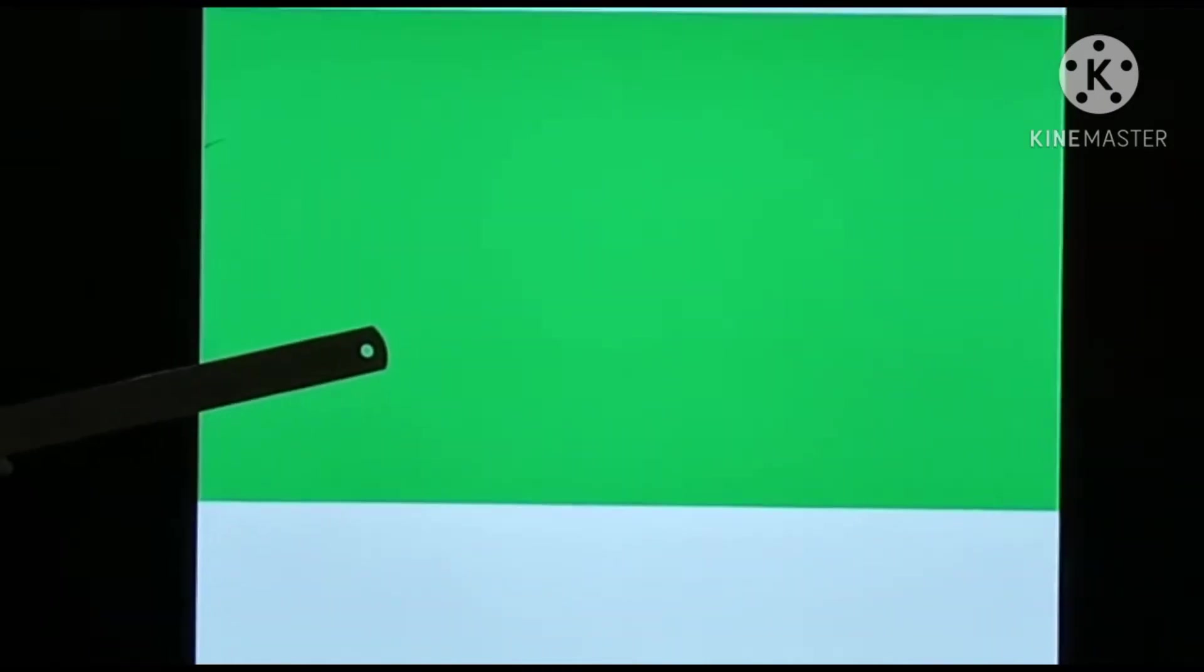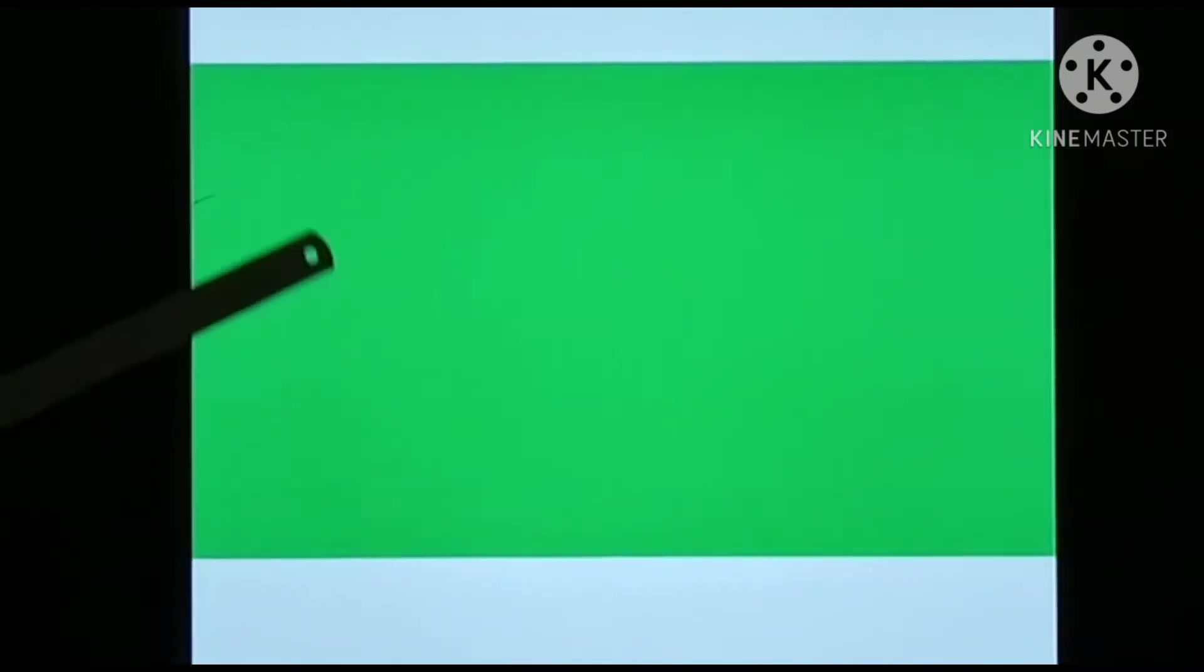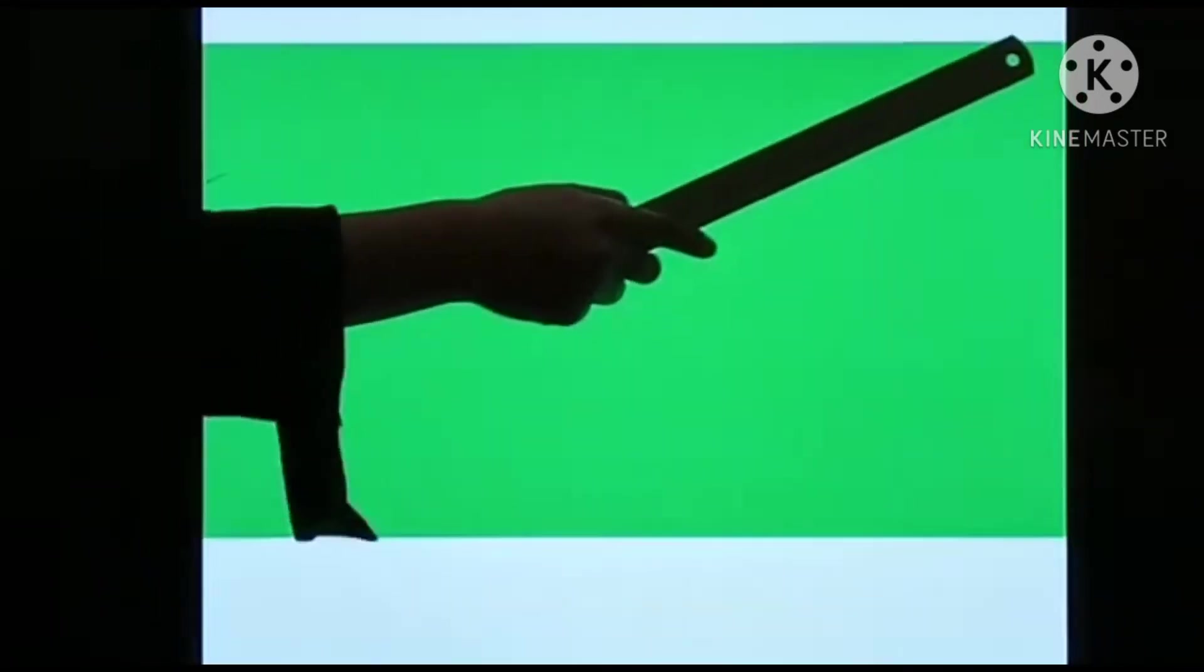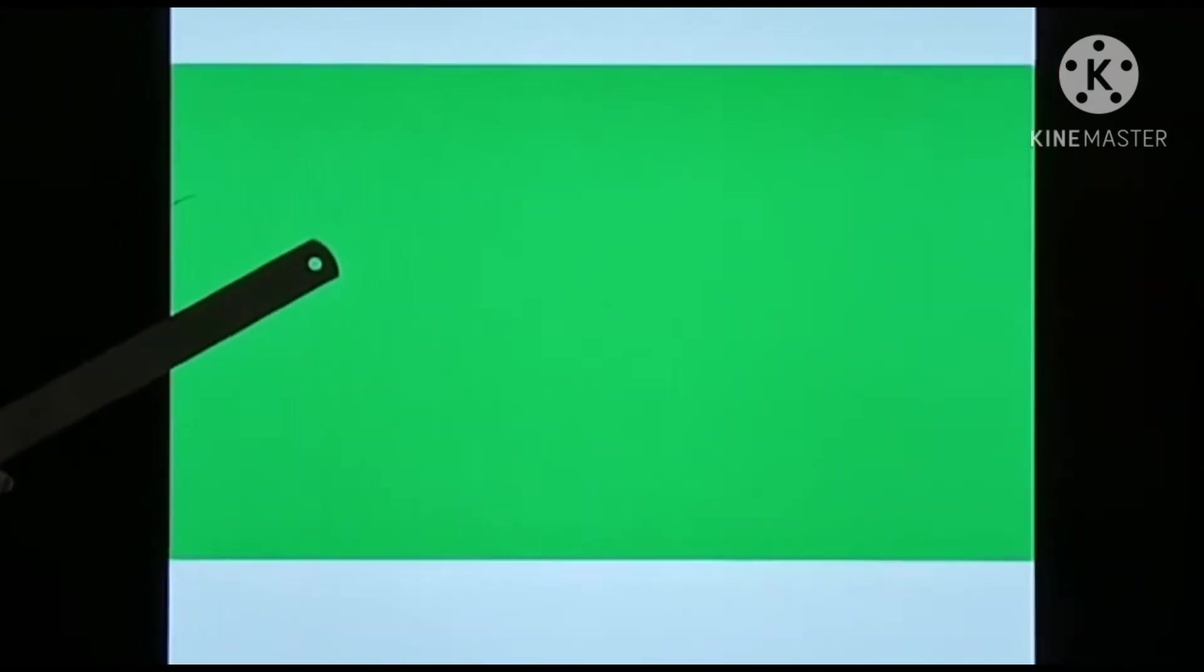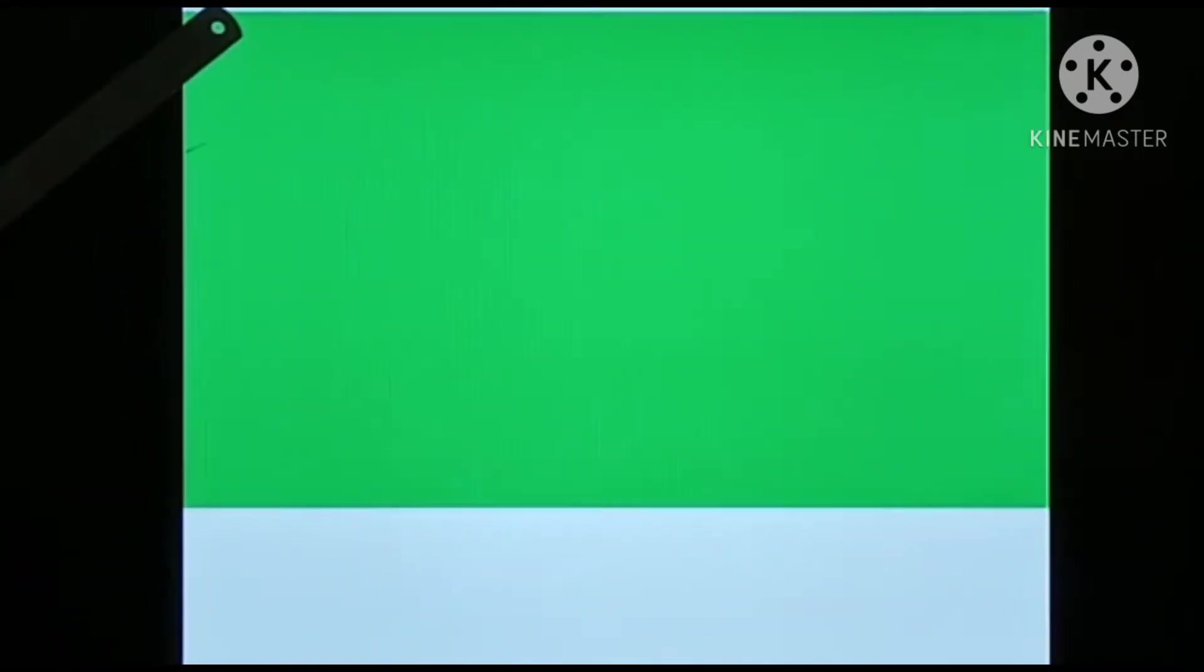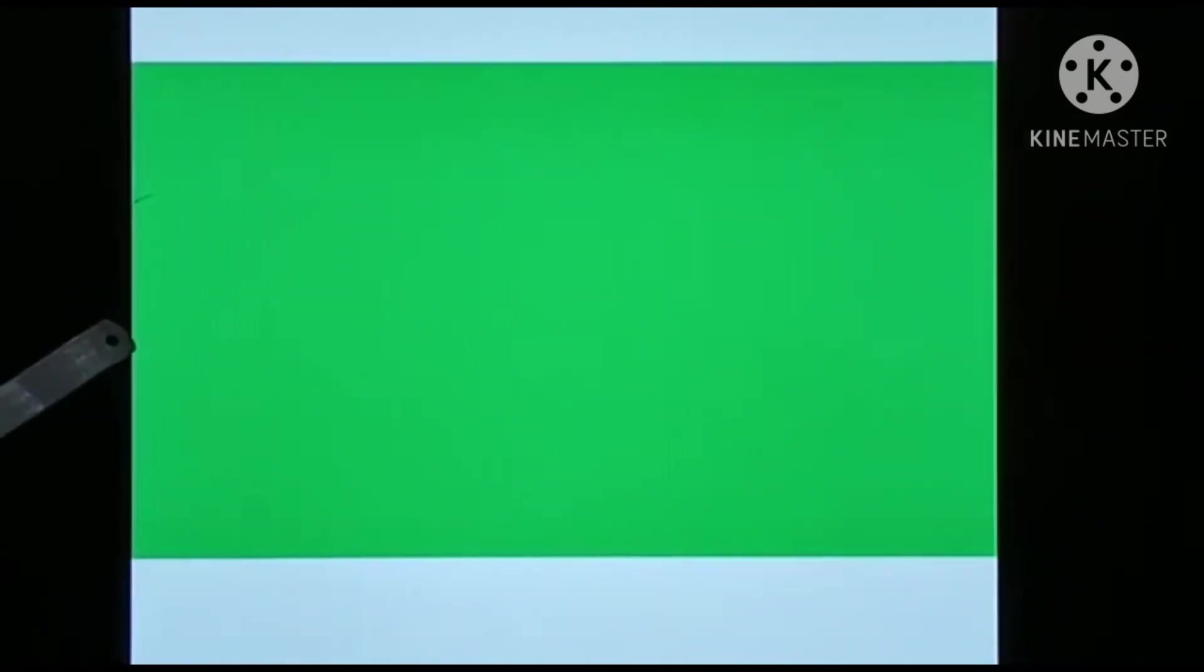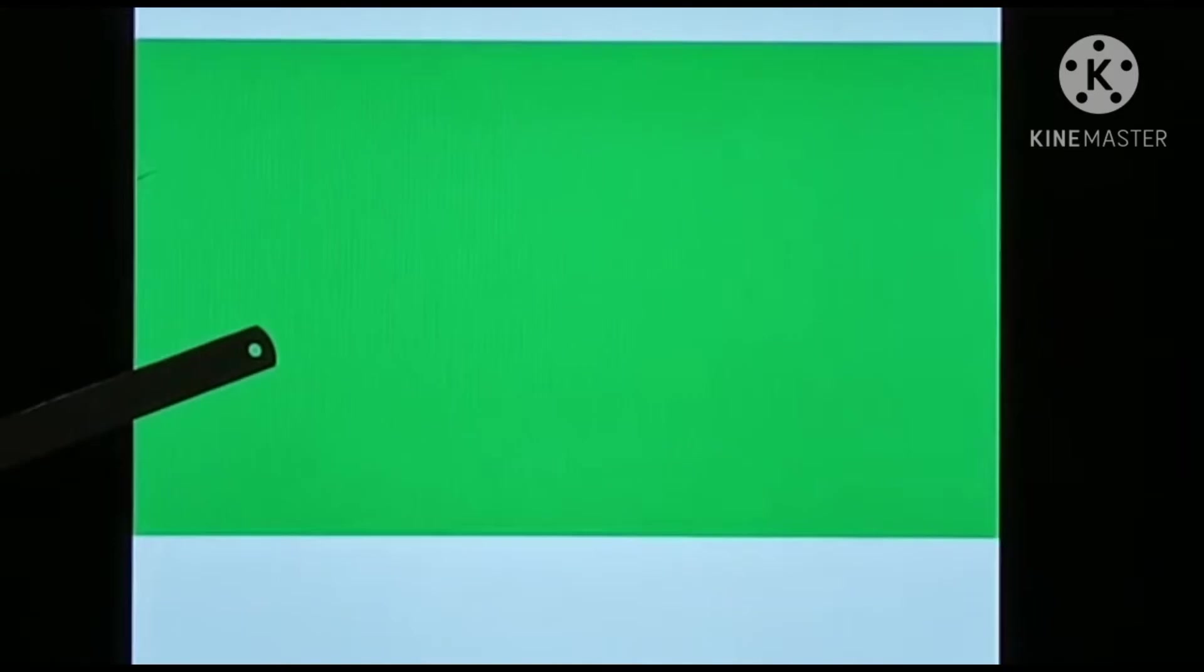Which shape is this? It's rectangle. Rectangle has four corners. One, two, three, four. It has four corners. But only opposite sides are equal. Look at here. This one is long. Long sides and two sides are short. Which shape is this? It's rectangle.